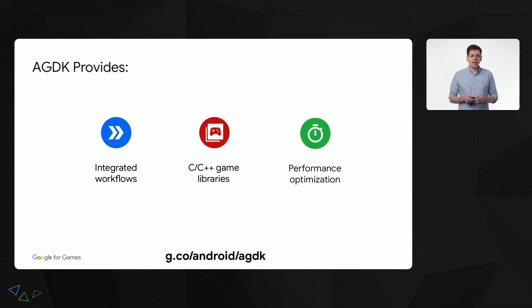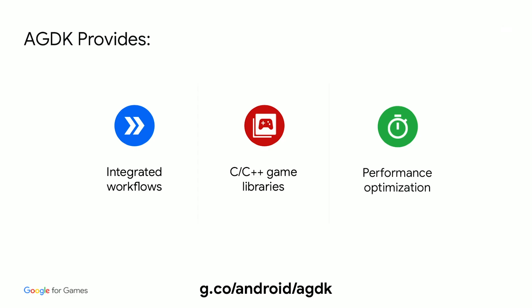There are three key areas of game development where the AGDK can help. Firstly, we have a variety of integrated workflow tools to make Android development efficient — for example, the Android Game Development Extension helps you use your favorite Android tools inside of Visual Studio. AGDK also includes a suite of C and C++ development libraries, such as GameActivity and GameTextInput, to help you focus on the most important code and minimize the Java native interface. And lastly, we have a focus on performance optimization, such as with our new Android GPU Inspector.